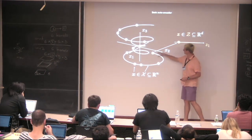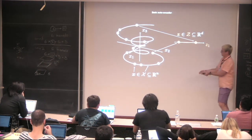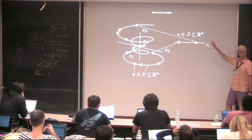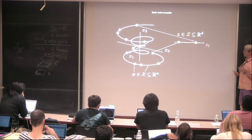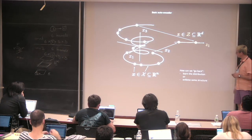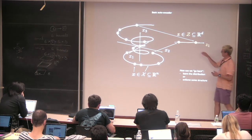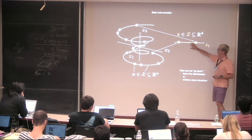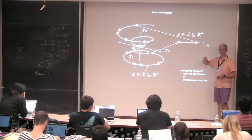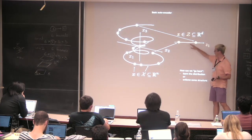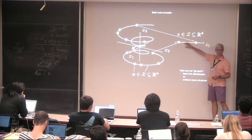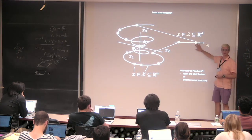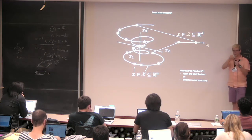How can we go the other direction — sample in the latent space and generate new examples? You could learn a non-parametric distribution of the latent points to see where they are, or enforce some structure in the latent space so you can sample from a known distribution. If the manifold has loops, those are handled by the higher dimensionality of the latent space.